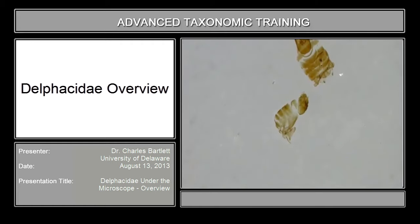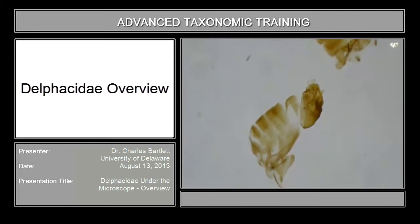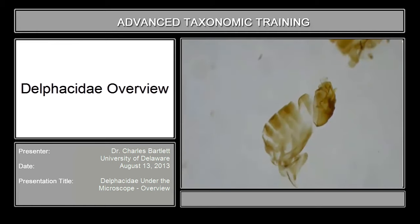As we go through the key, I have specimens that are dissected that I can show you. To examine the male genitalia of the del facets, you have to break the end of the abdomen off and put it in KOH. If you're not in a hurry, 10% KOH overnight. If you are in a hurry, you can either up the percentage KOH or heat it or both.